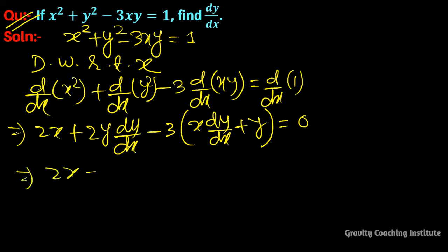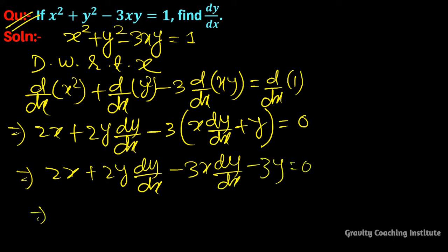2x plus 2y dy/dx minus 3x dy/dx minus 3y equal to 0. And here we will take dy/dx as common factor.